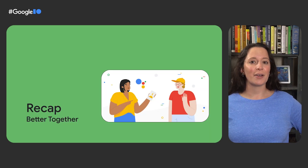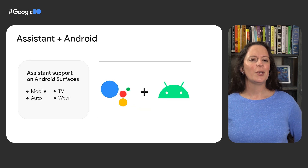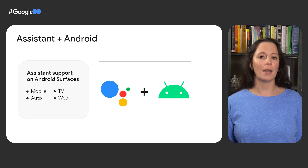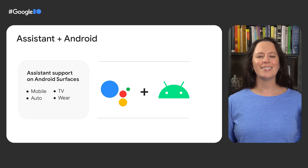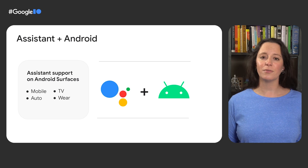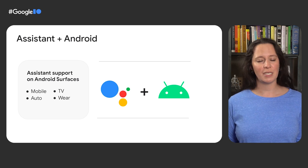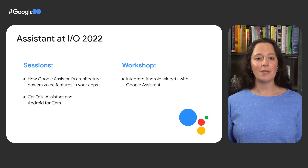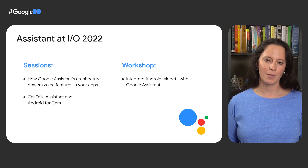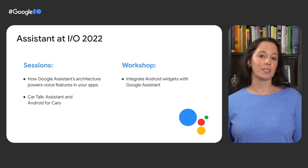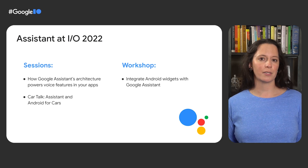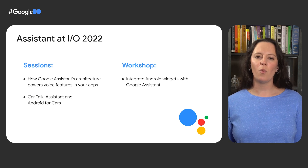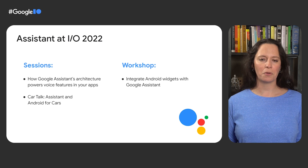Wow, that's a lot of devices we just covered. You've now seen how developers can easily integrate voice functionality with the Android shortcuts and media APIs to create a seamless user experience with Assistant on different Android devices, including mobile, Wear, TV, and Auto. Don't forget to watch our other sessions, including our deep technical dive into Google Assistant's architecture, as well as our deeper dive into Assistant for Android Auto. If you are looking to get started building out your own Assistant integration on an Android device, check out the workshop that will walk you through integrating Android widgets with Google Assistant.